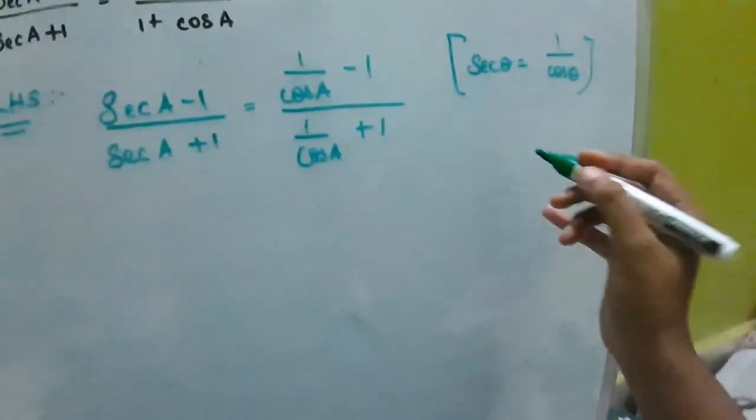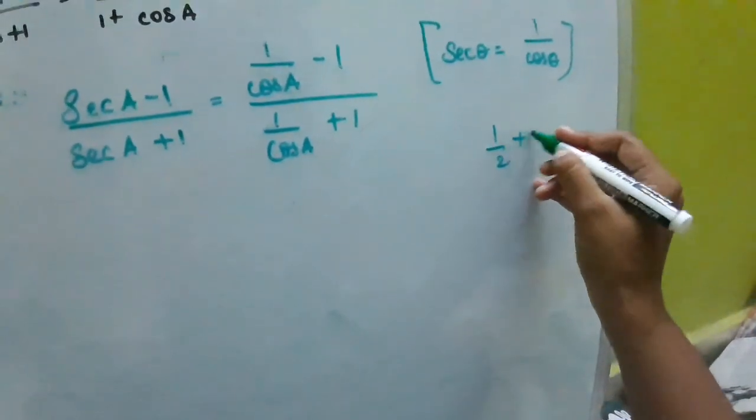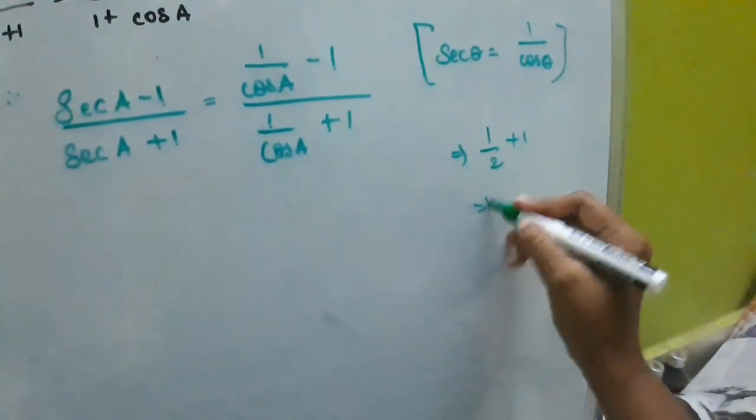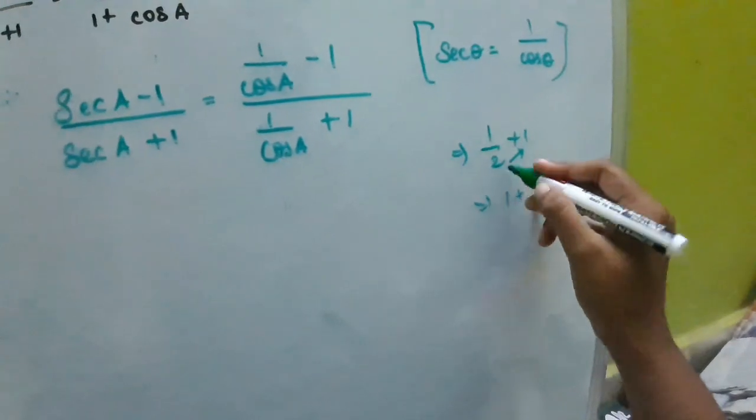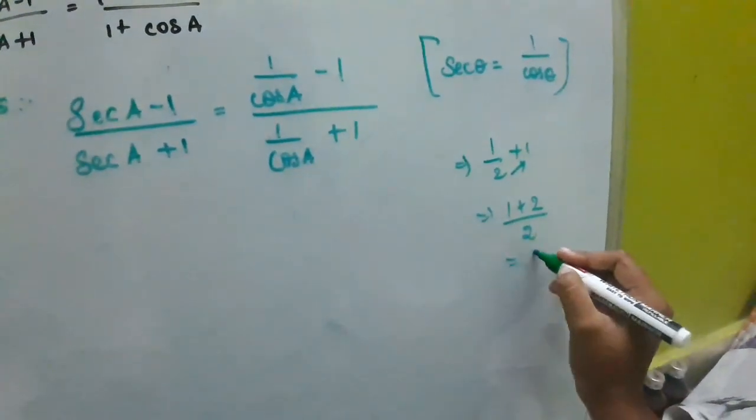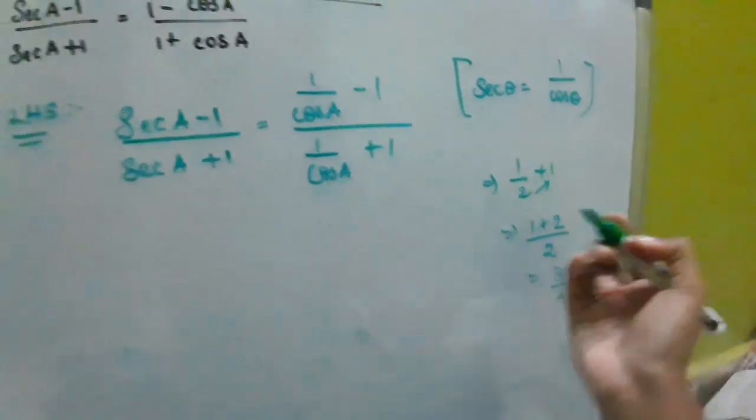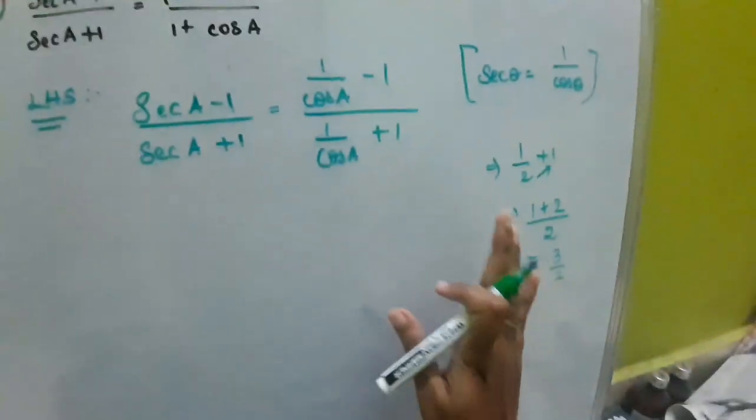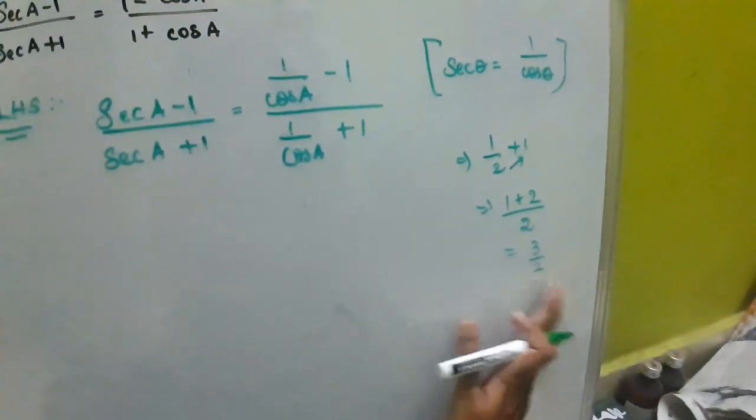Here it is as a mixed fraction. What would we do? If there is 1 by 2 plus 1, we will do 1 plus 1 into 2, 2 divided by 2, so it will be 3 by 2. So, mixed fraction, we will take it to improper fraction.